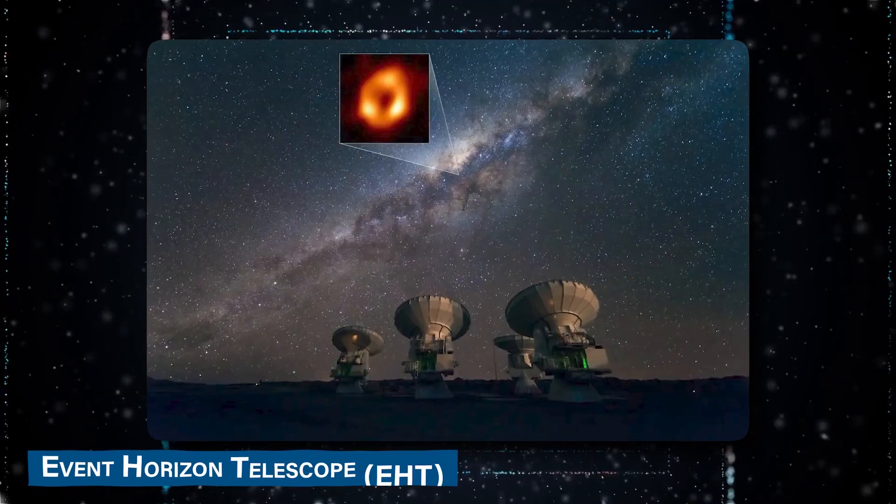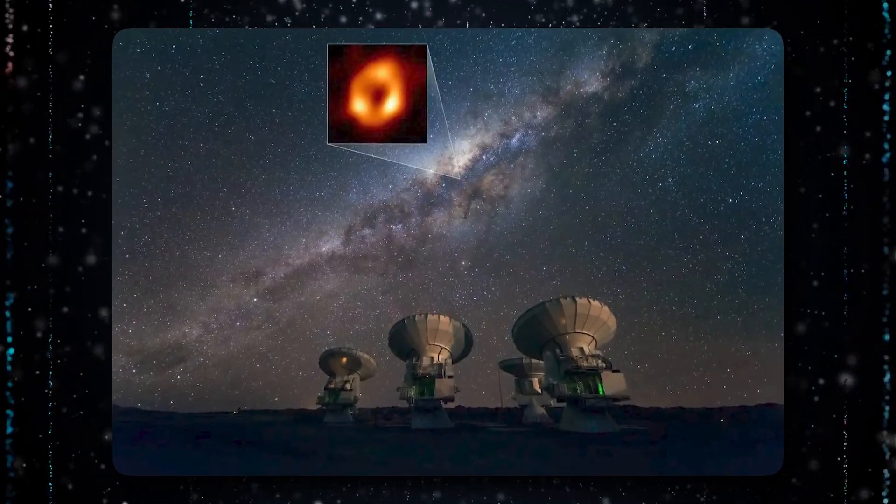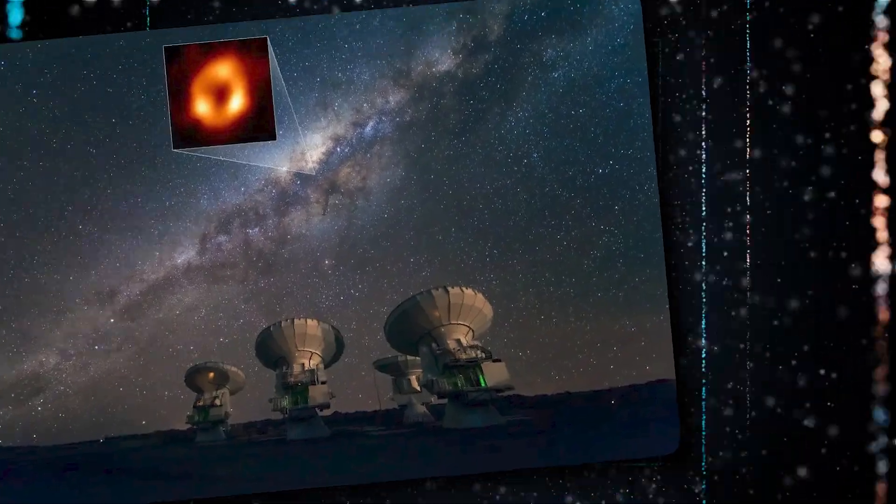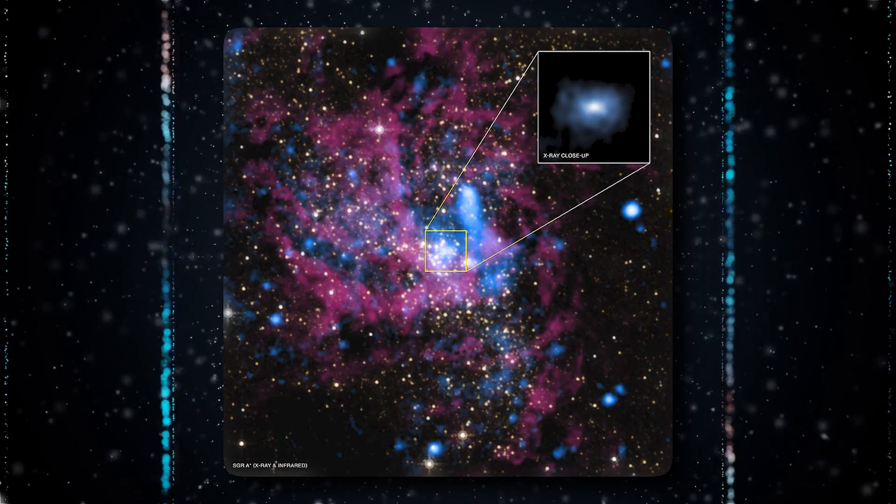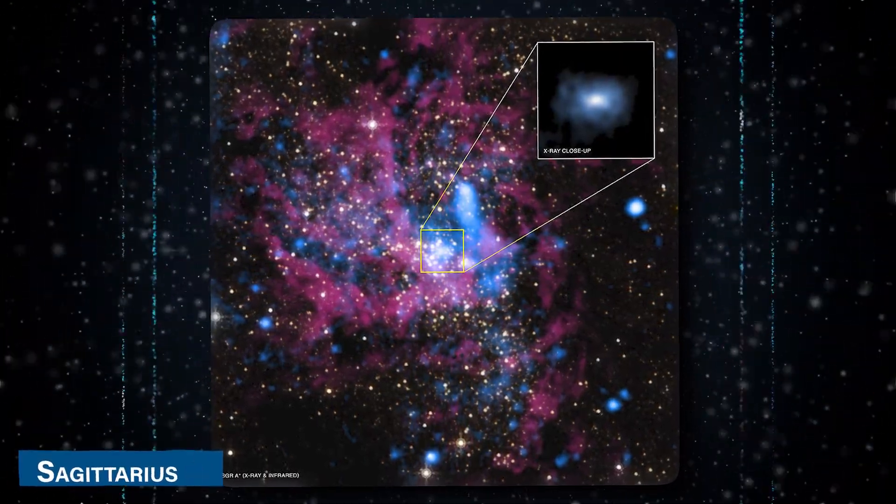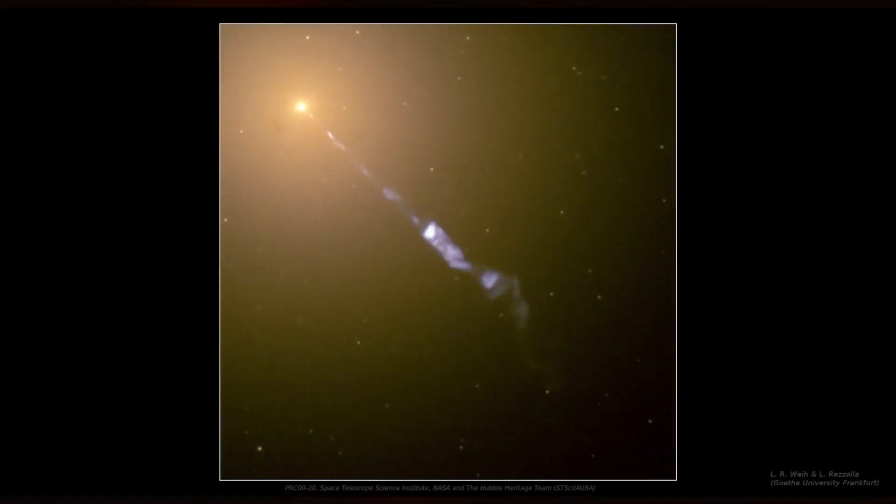the groundbreaking work of the Event Horizon Telescope collaboration has provided us with a stunning visual representation of a black hole. At the heart of our galaxy lies the supermassive black hole known as Sagittarius A-Star. Through the EHT's efforts, we now have the first direct visual evidence of a black hole.